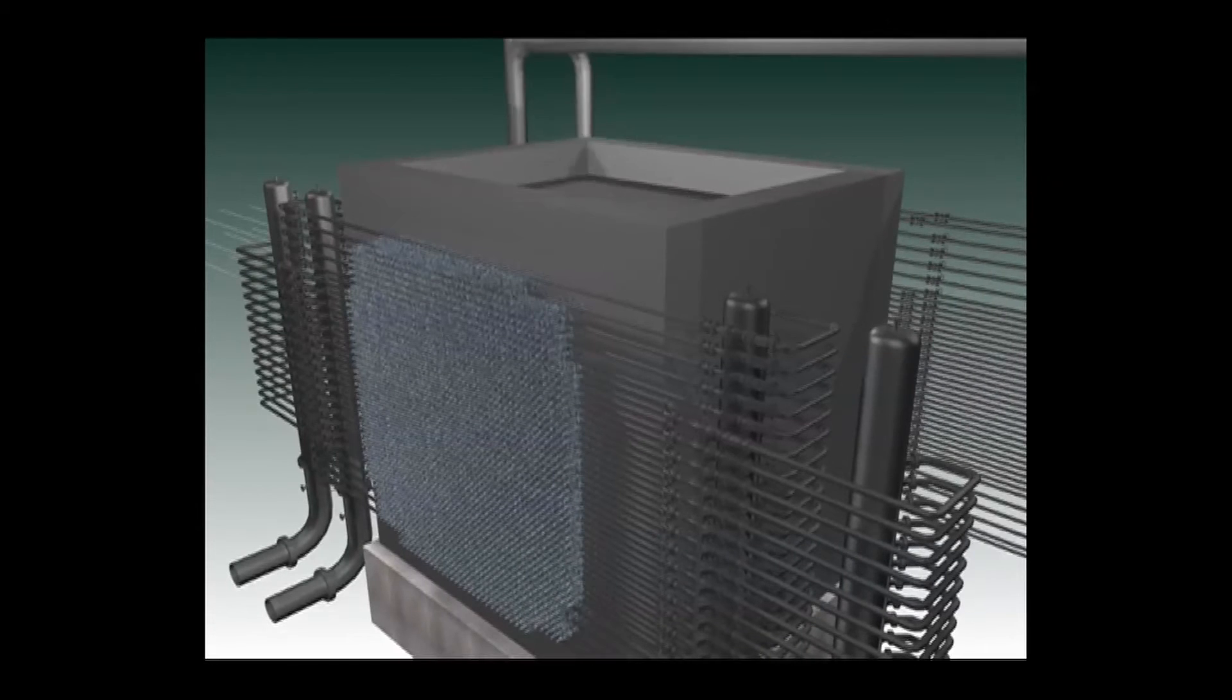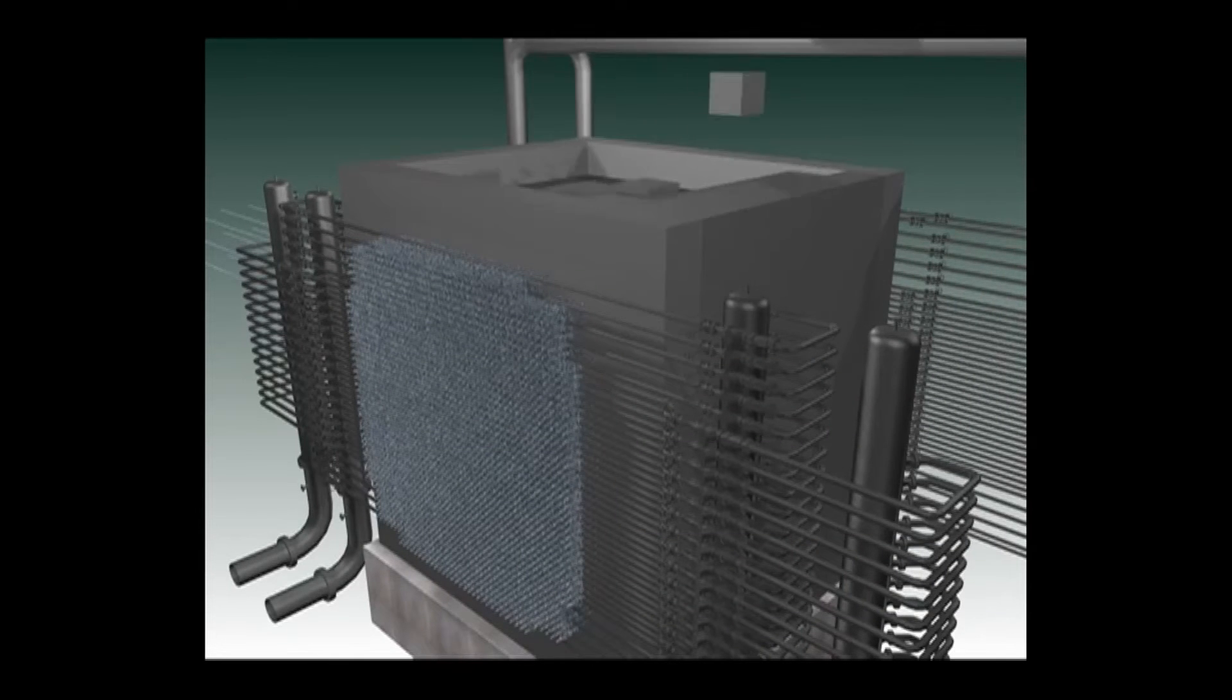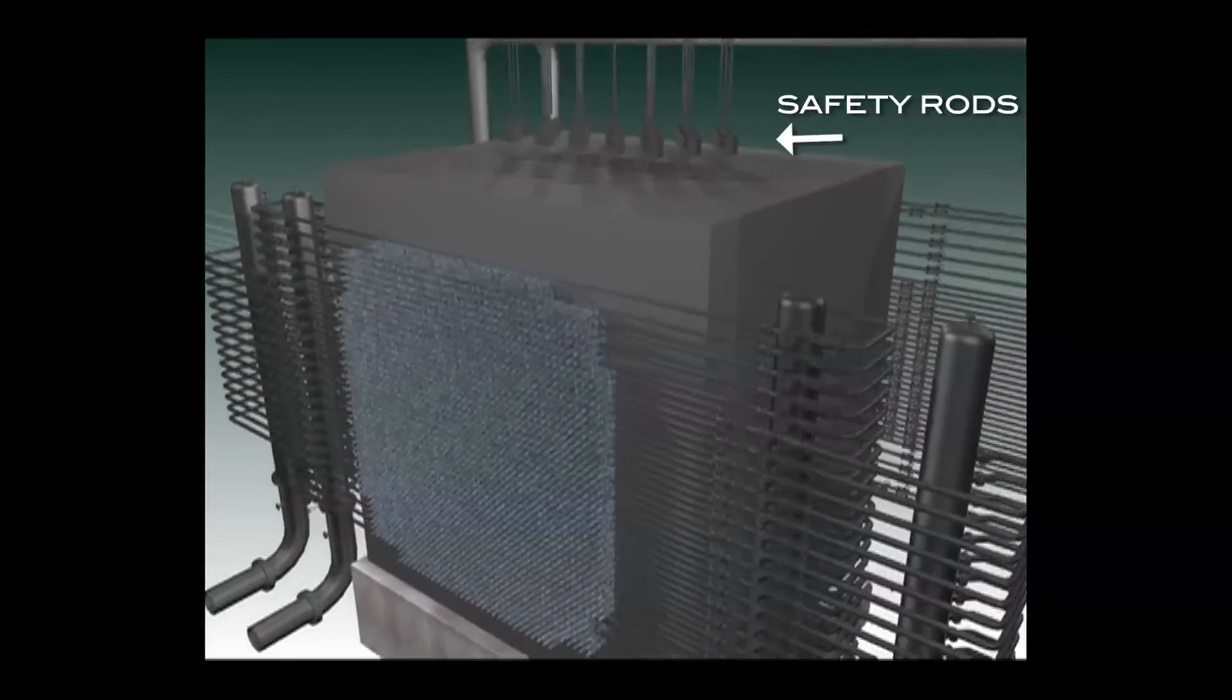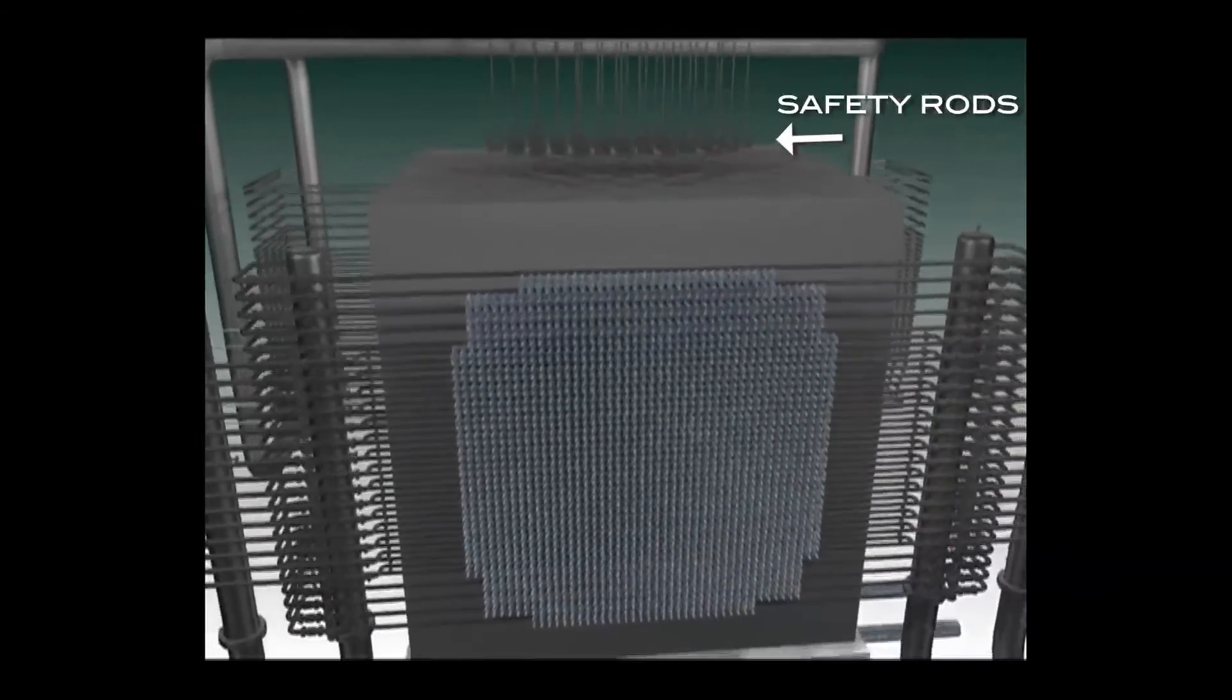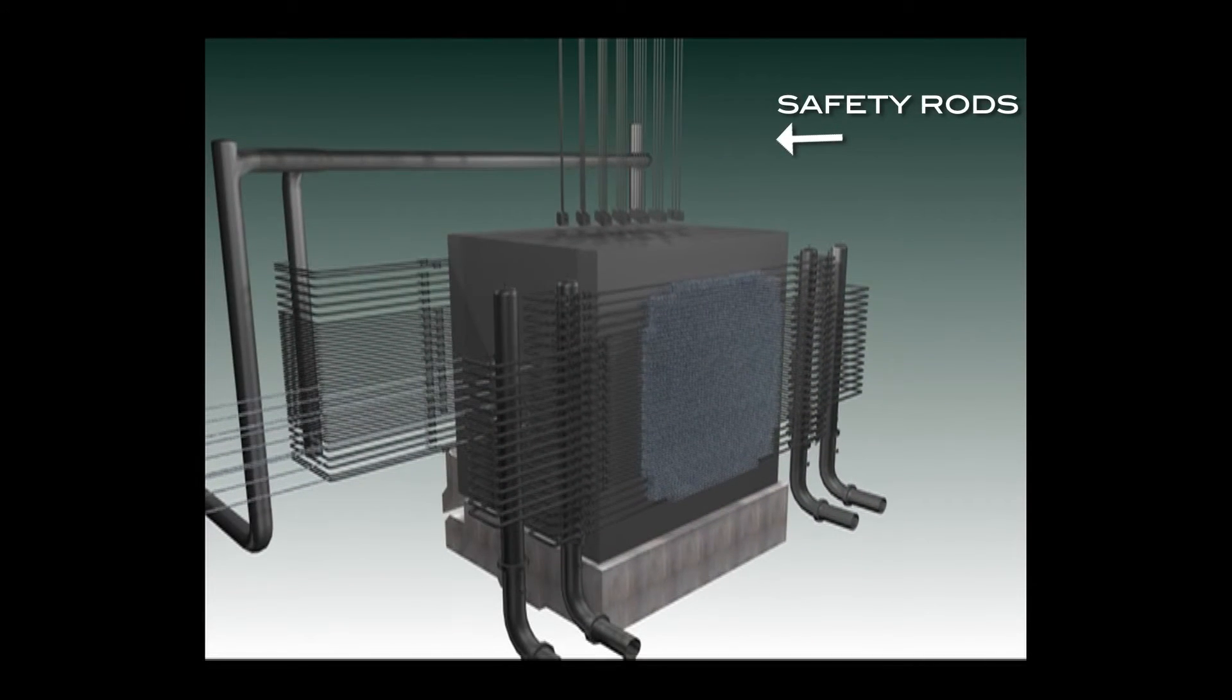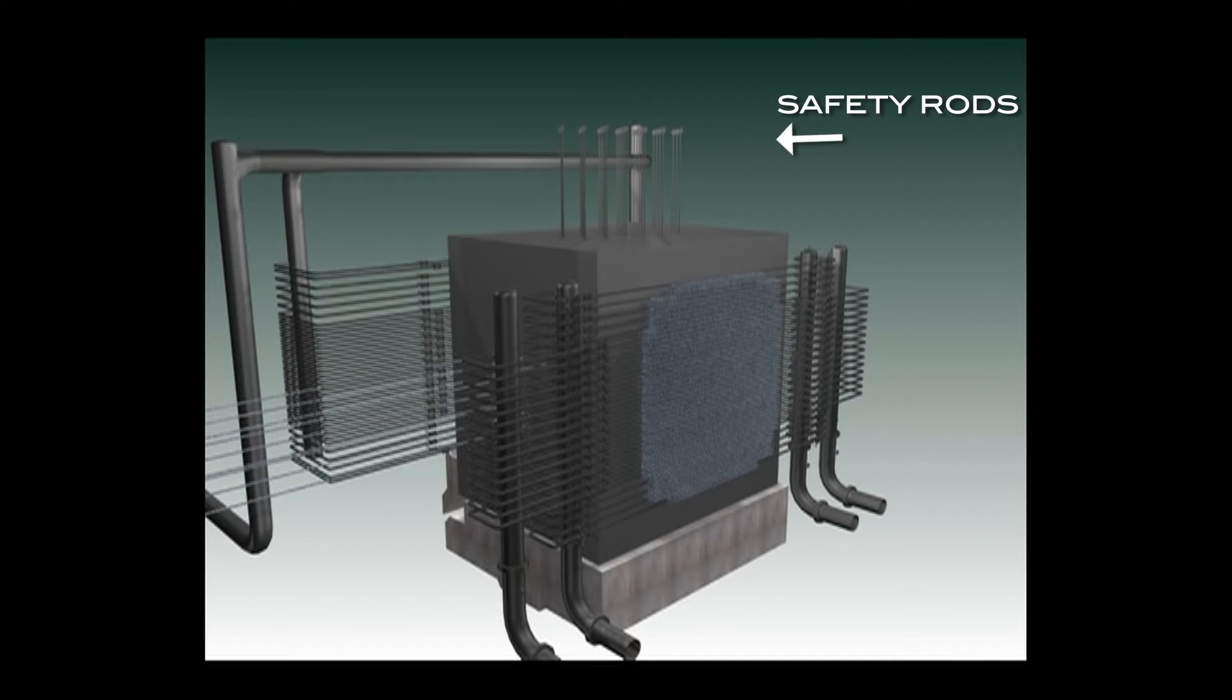The top shields are now put in place. The 29 safety rods are now moved into position. The rods hang above shielded fittings in the top shield and if needed can be dropped through holes in the shields and the graphite into the reactor.